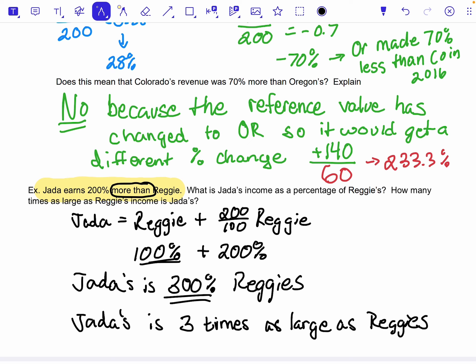So if I took Reggie's income, times it by three, I would get Jada's. And that would end up being 300 times as large. So it's just sort of thinking about, and I feel like the tax problems we've done have sort of built on this a little, but this is sort of how we can use percentages to relate things and compare things.